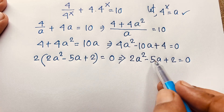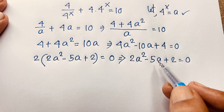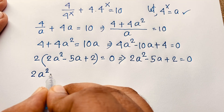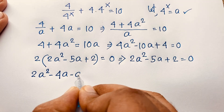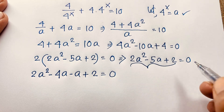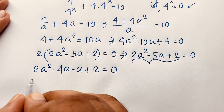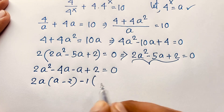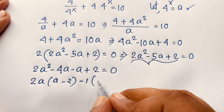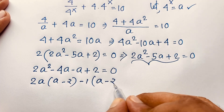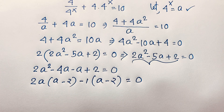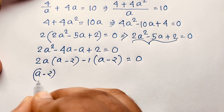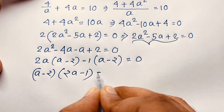Now I apply the middle-term factoring method. The coefficient product is 2 times 2 equals 4, and 4 times 1 equals 4, with 4 plus 1 equaling 5. So we split the middle term: 2a squared minus 4a minus a plus 2 equals 0. Factoring: 2a(a minus 2) minus 1(a minus 2) equals 0.